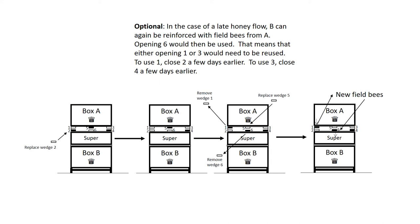Here opening one will be used. Wedge two is replaced a couple of days before removing wedge one. Then wedge five is replaced and wedges one and six are removed. New field bees in A will leave by opening one and return by opening six.